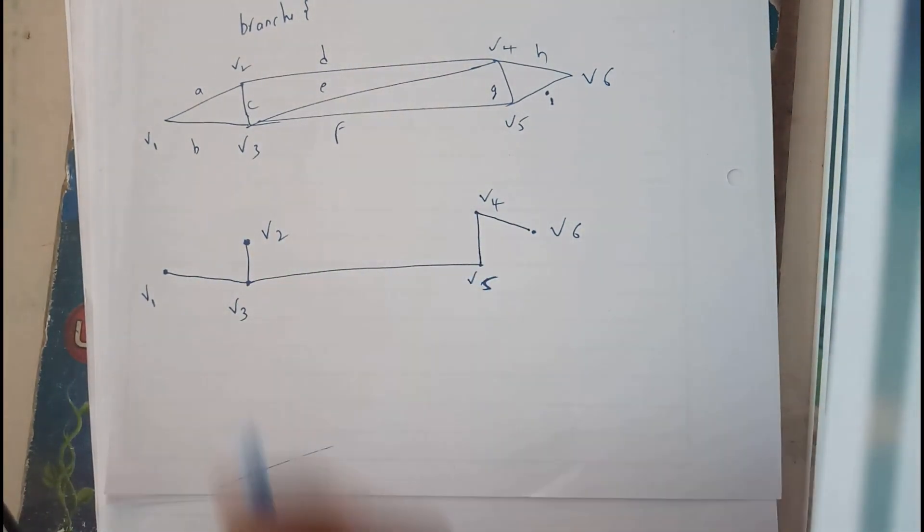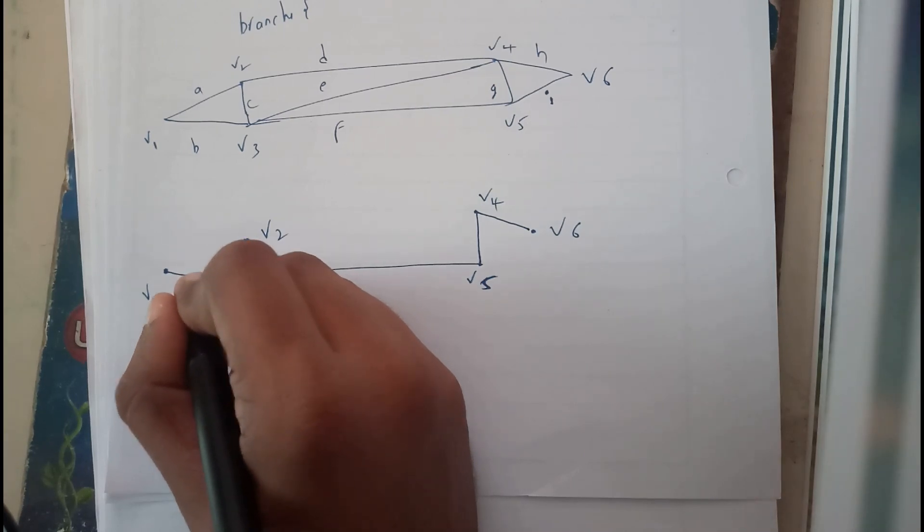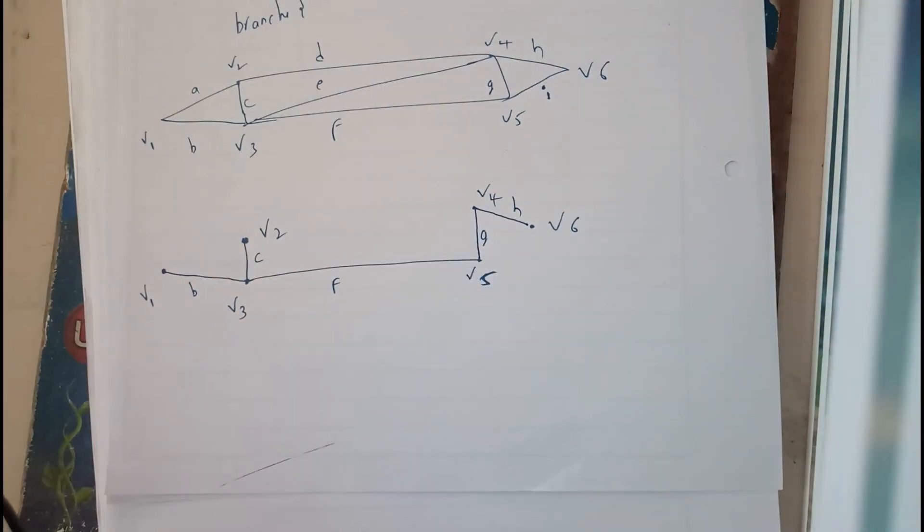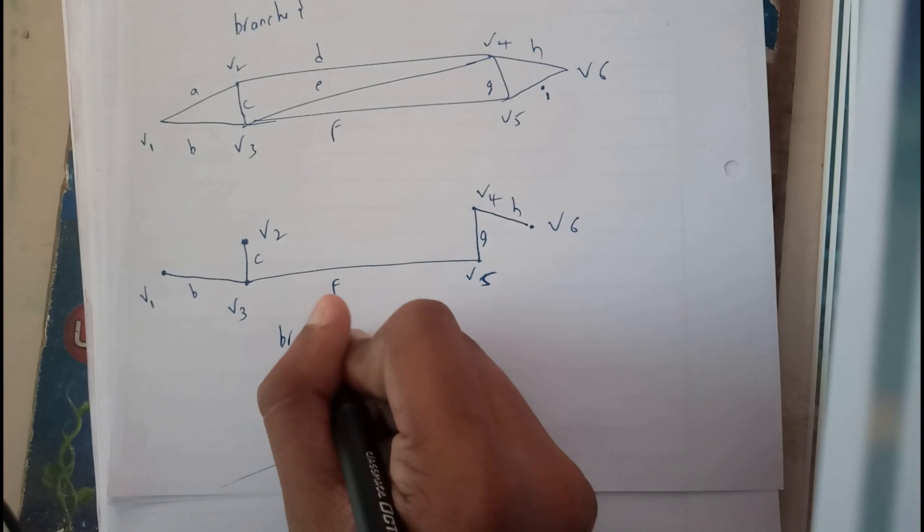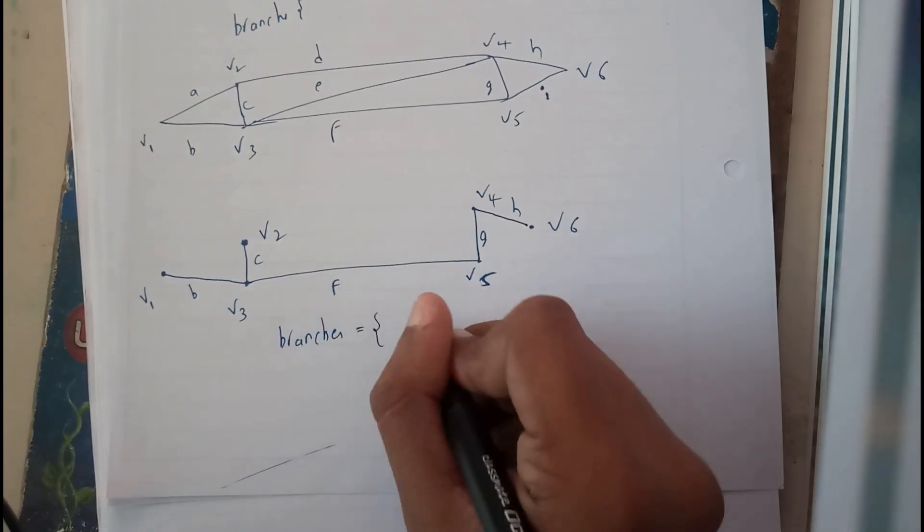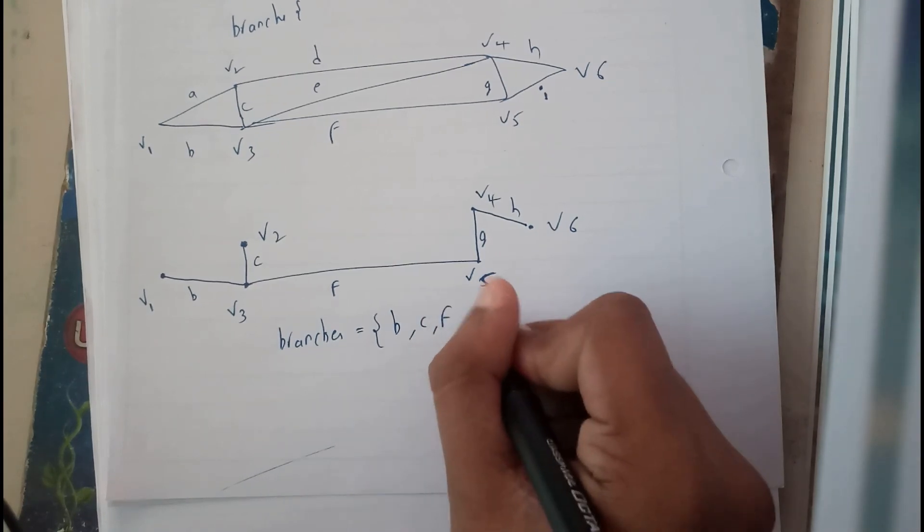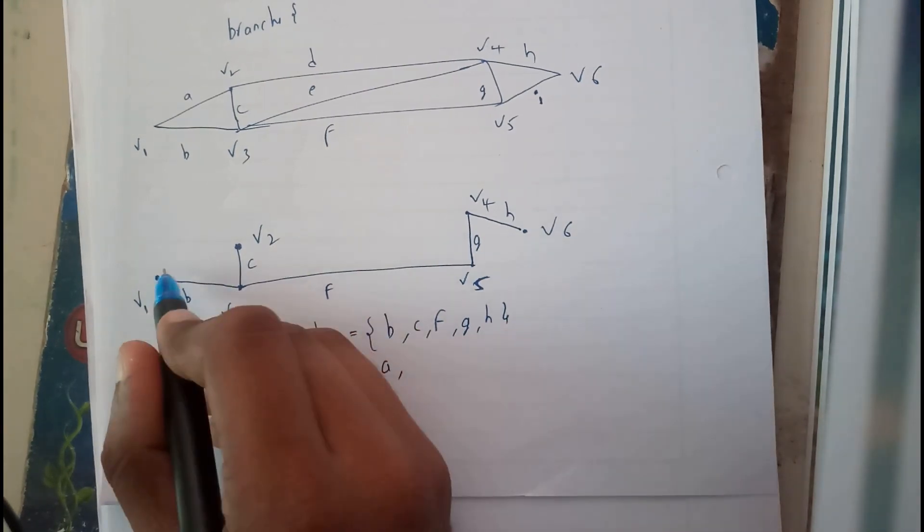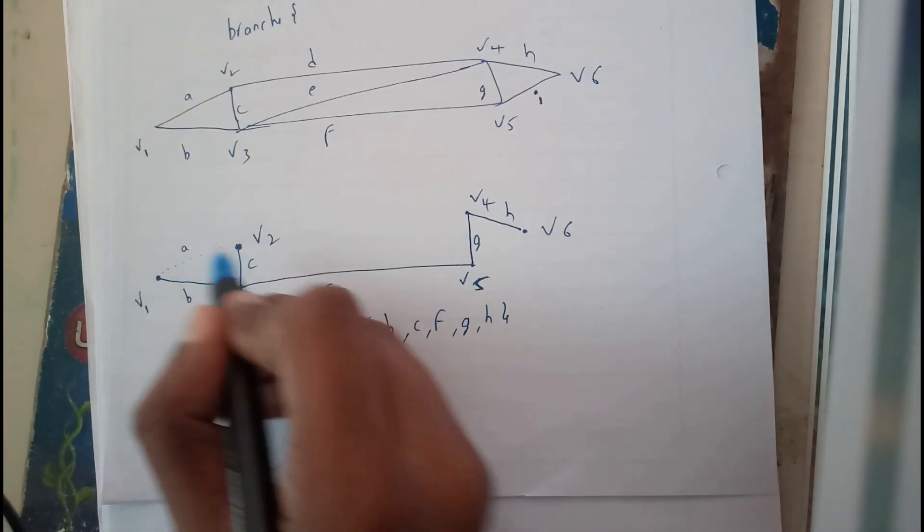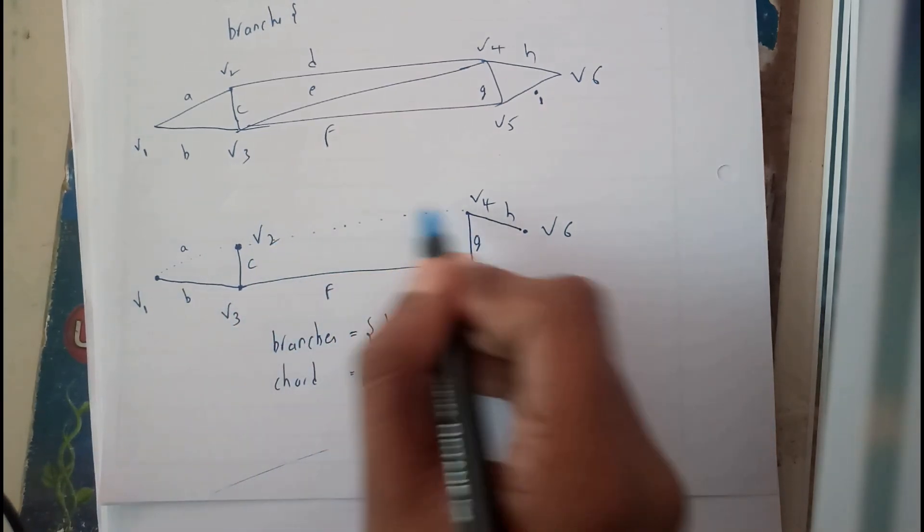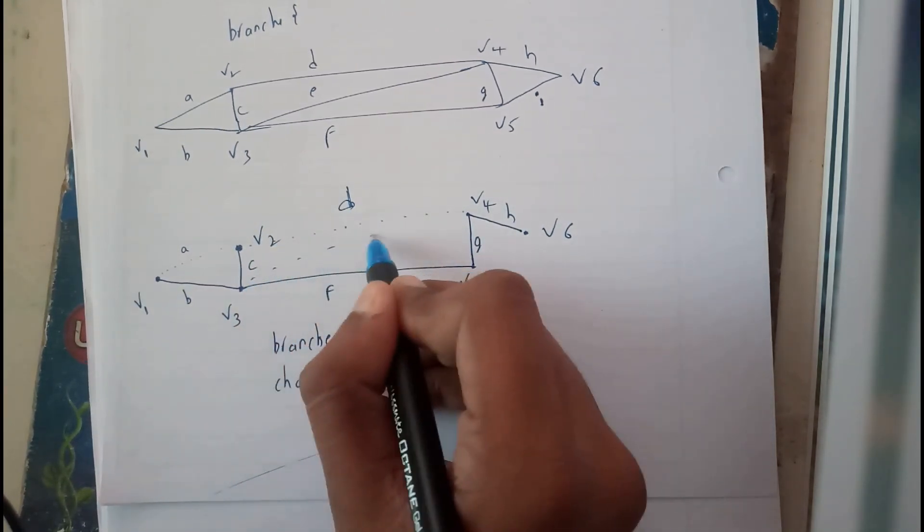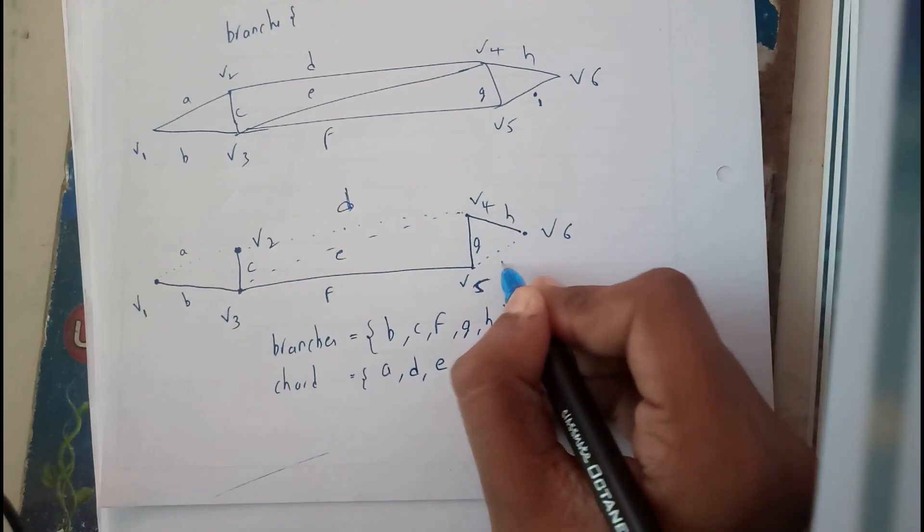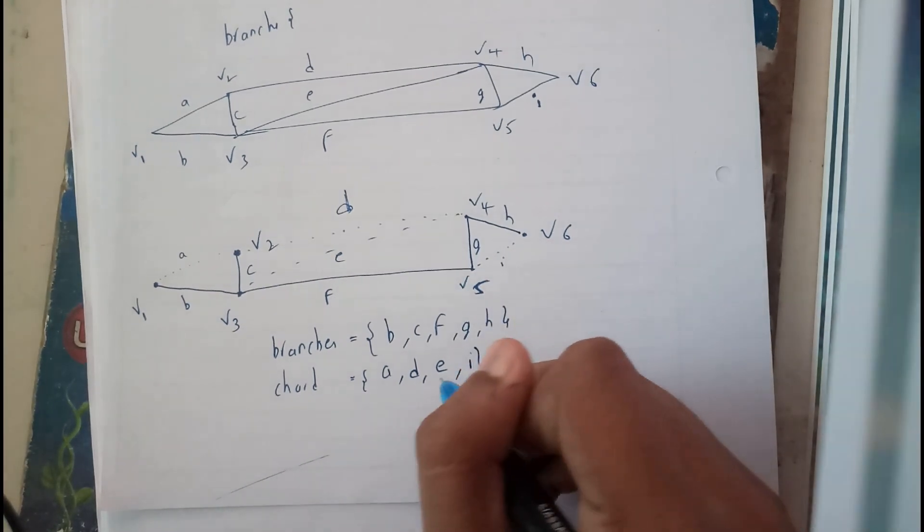I'll be writing these branches. Let us take the edges A, B, C, F, G, H. So all these will be coming under branches: B, C, F, G, H. And all the rest are chords - the missing elements are D, E, and I.